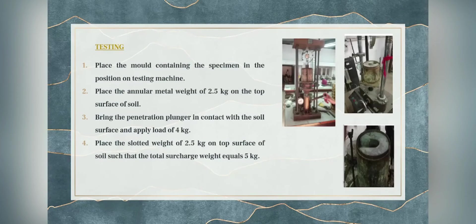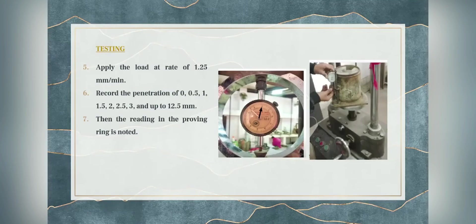For testing, place the mold containing the specimen on the testing machine. Place the annular metal weight of 2.5 kg on the top surface of the soil, bring the penetration plunger in contact with the soil surface, and apply a load of 4 kg. Place the slotted weight of 2.5 kg on the top surface such that the total surcharge weight equals 5 kg. Apply the load at a rate of 1.25 mm per minute and record the penetration at 0, 0.5, 1, 1.5, 2, 2.5, 3, and up to 12.5 mm. The reading on the proving ring is noted.